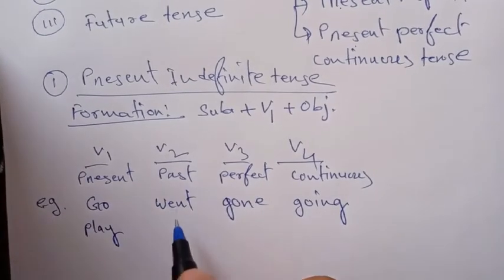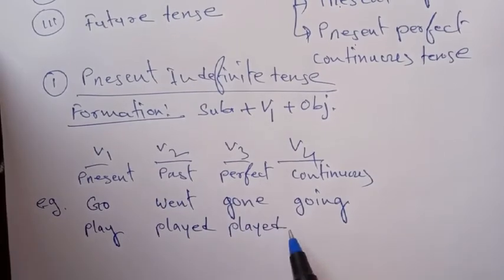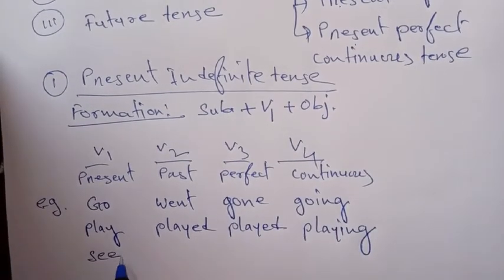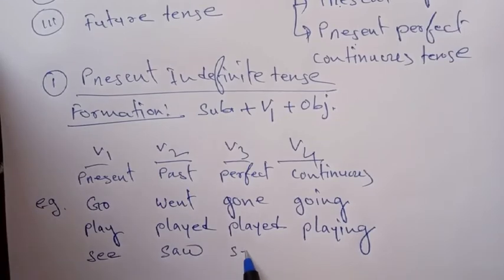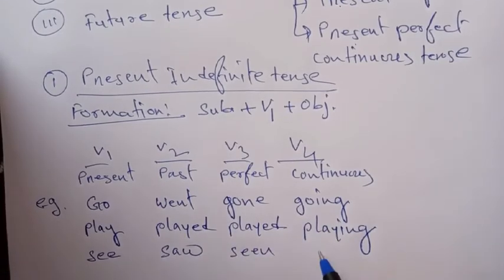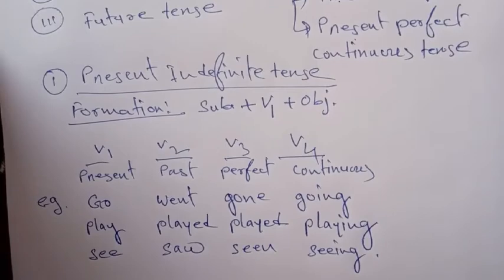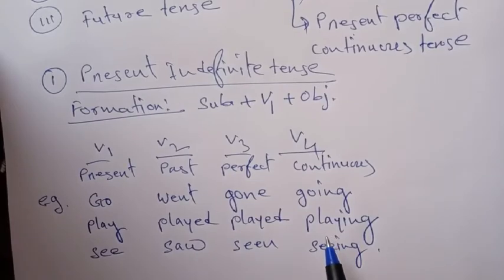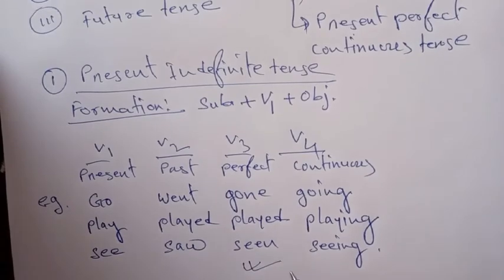So, we will use the verb 'play.' Play is the verb we are using as our example. There are two examples — one, two, three, four — so these are the examples of the two examples.